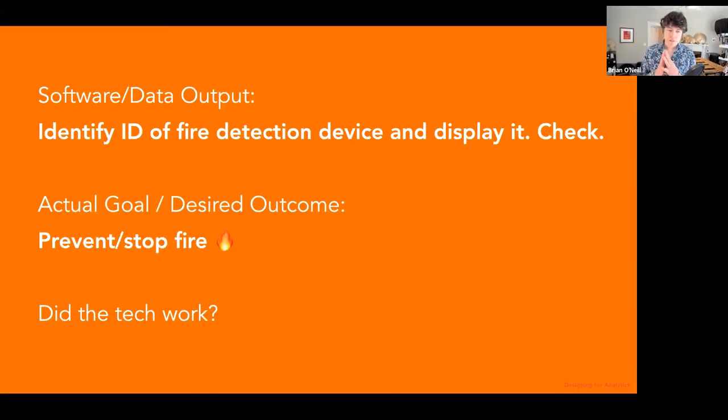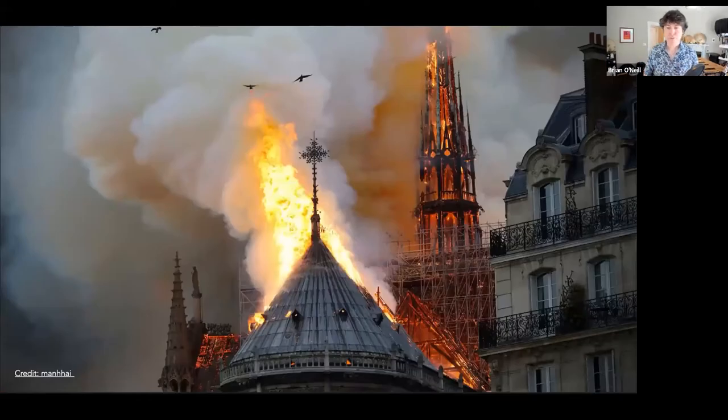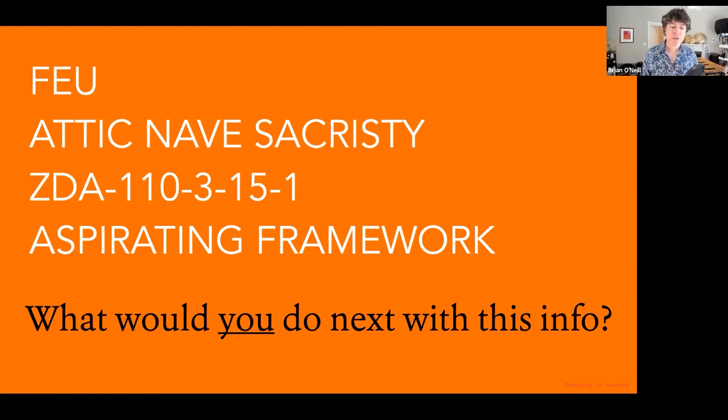The question is, does this look like human centered decision support? And that's really what analytics and machine learning and all of this tends to be about. Ultimately we are trying to build decision support solutions much of the time. What this is, is the story of Notre Dame and we all know what happened with Notre Dame. So technically speaking, the software system, the analytics, the thing that was supposed to detect where this fire occurred, that technically worked. They were able to identify the ID, which is that code, the ZDA thing, this fire detection device and display it.